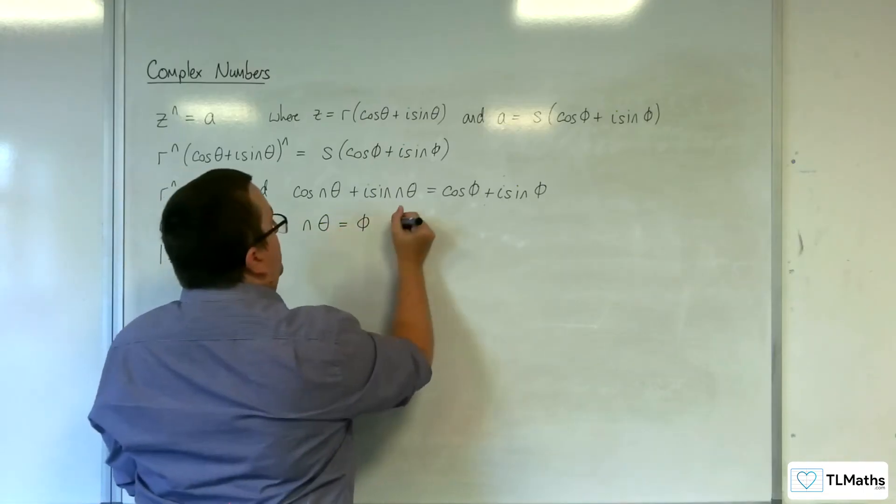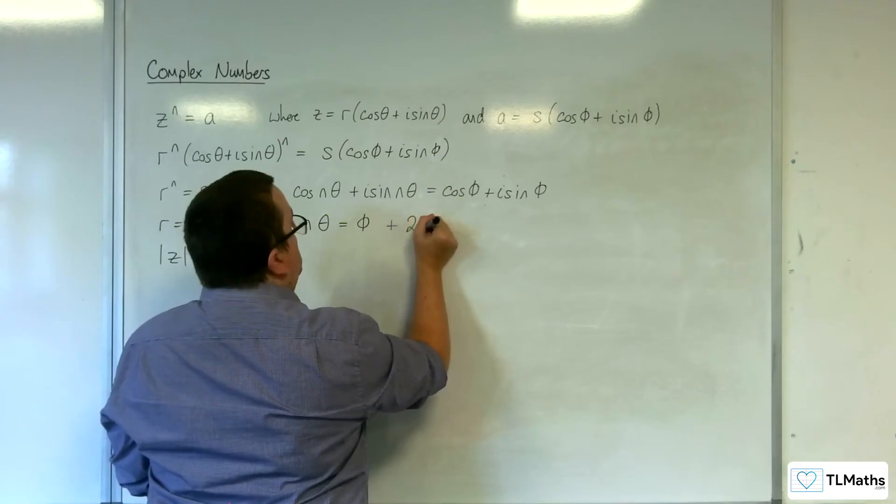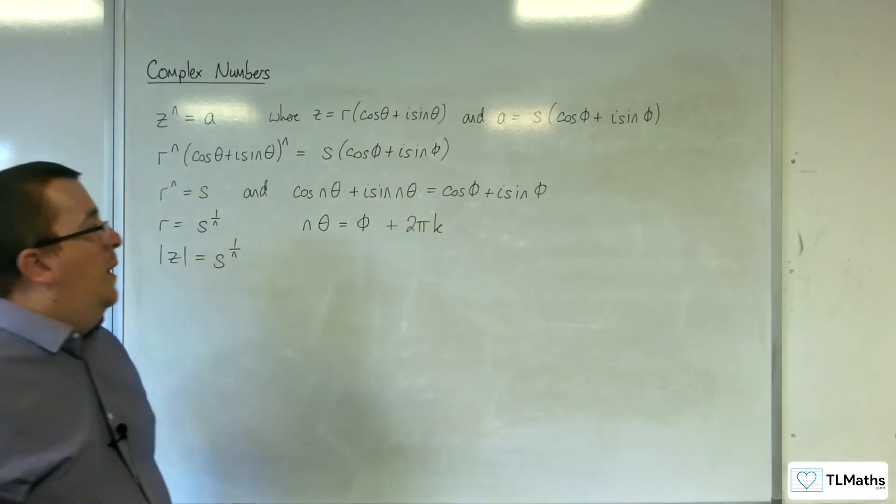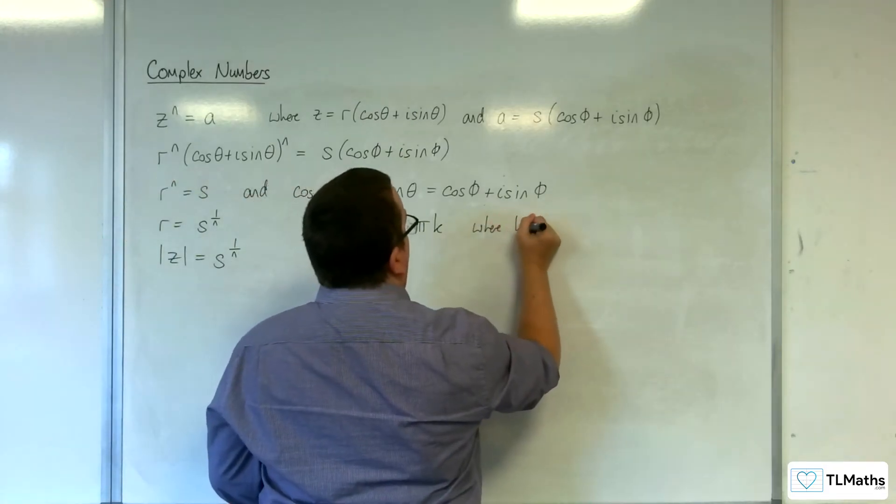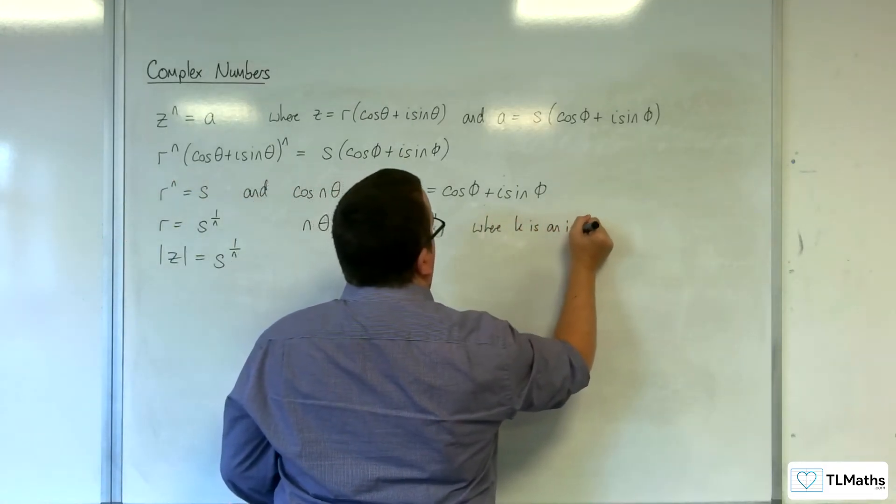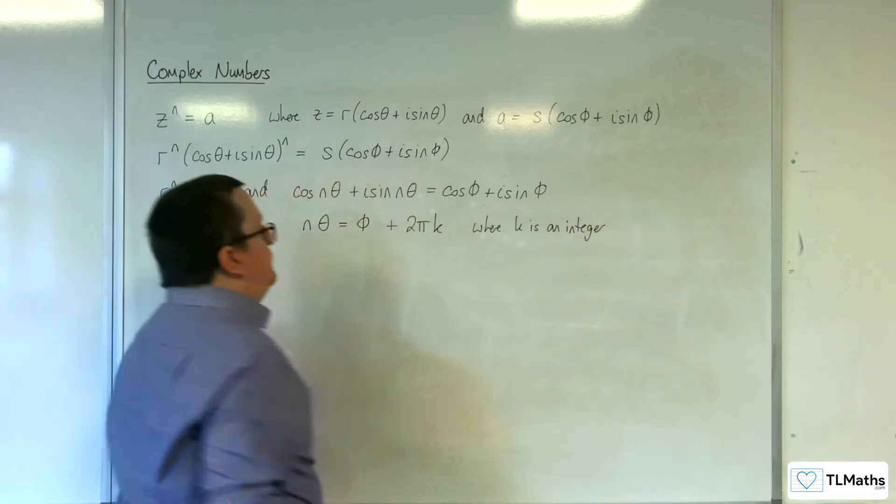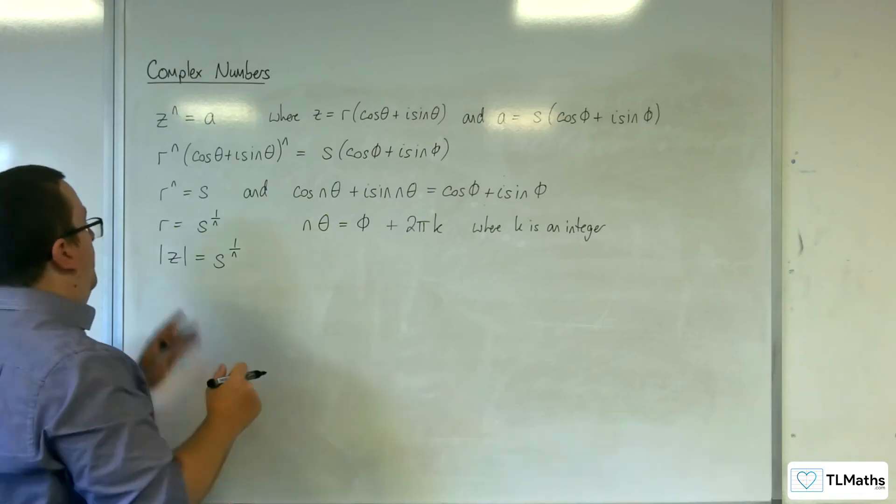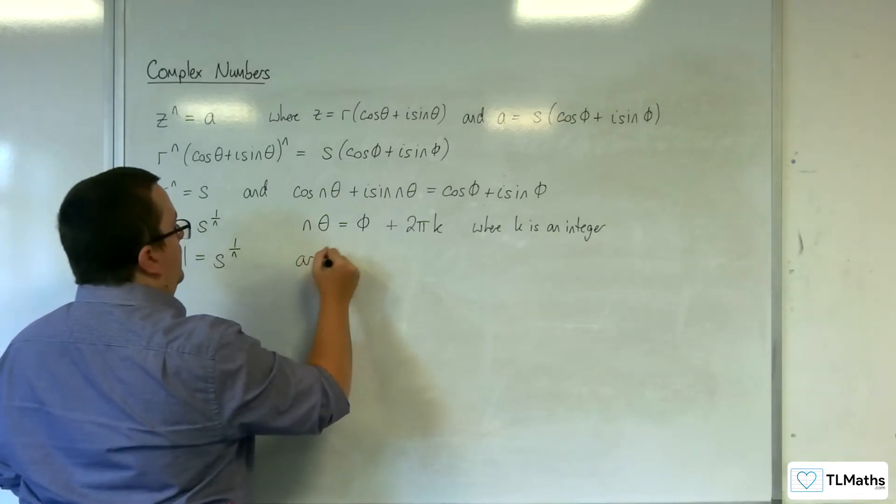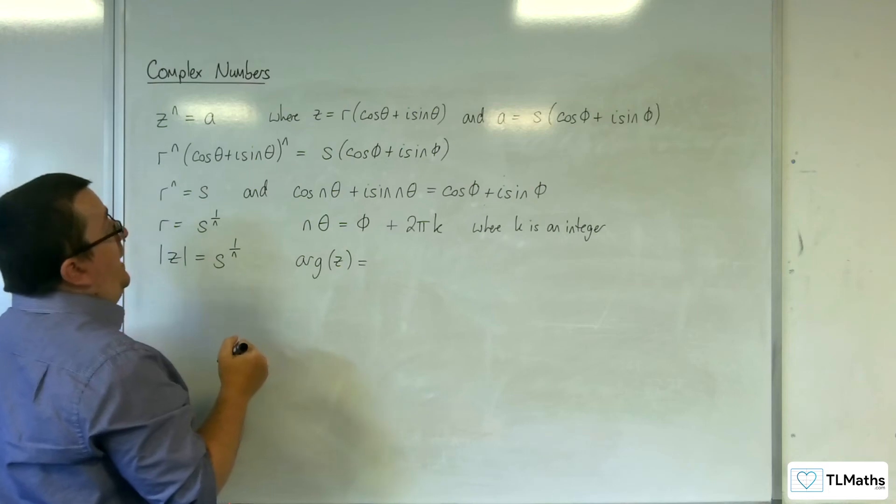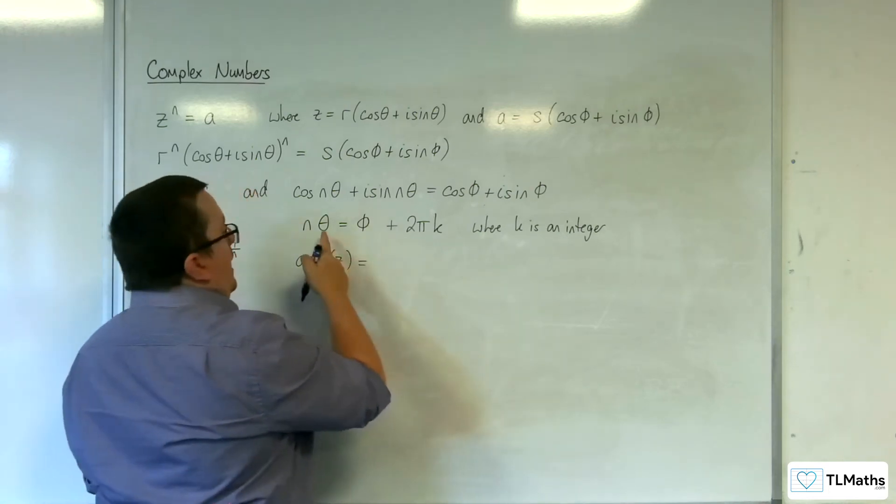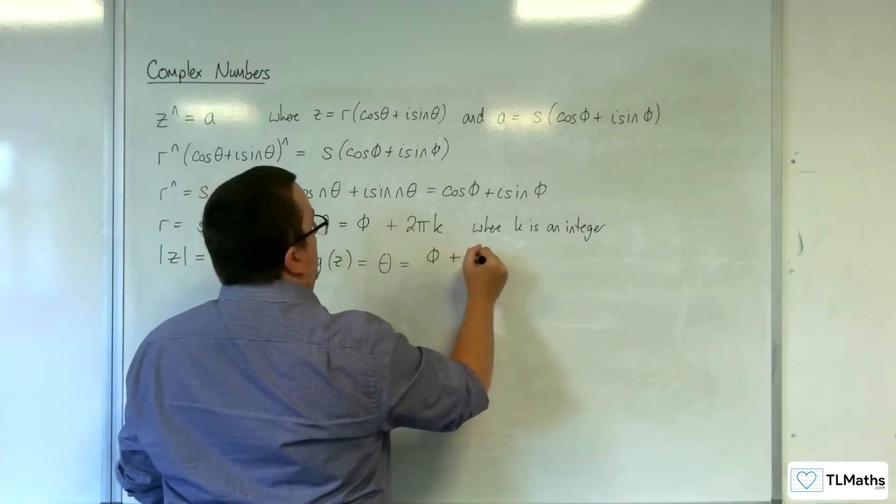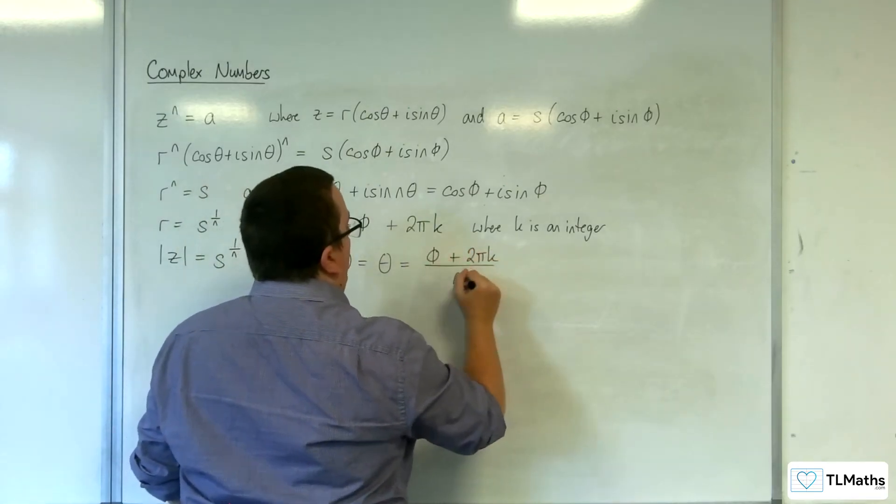So actually, this has got to be equal to phi plus some multiple of 2 pi, where k is an integer. So the argument of z must be equal to theta, which is equal to phi plus 2 pi k over n.